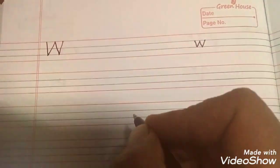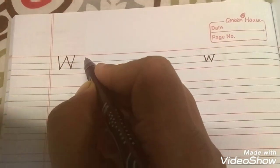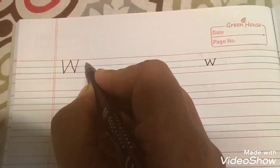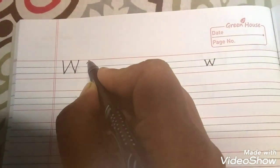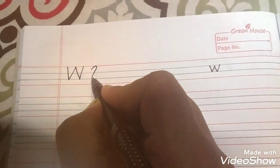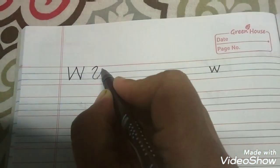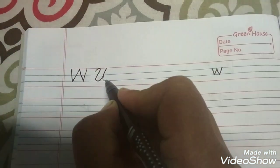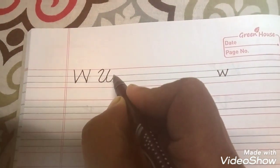Good morning dear children, time for your cursive class. So today we'll learn how to write W. For W, we'll start a little below the red line, take it up to the red line, down to the blue line, and make a U like this.